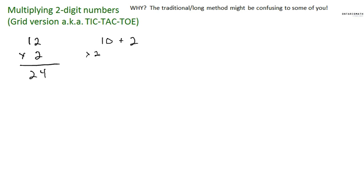Say we have to multiply twelve by two. Really what we're doing is multiplying a group of ten by two, so ten times two is twenty. And we're taking the group of ones, which is two — two times two is four. So the answer is still twenty-four. I just broke down twelve into ten times two and two times two, and it gives you the exact same number. It's the same idea, just done a different way.